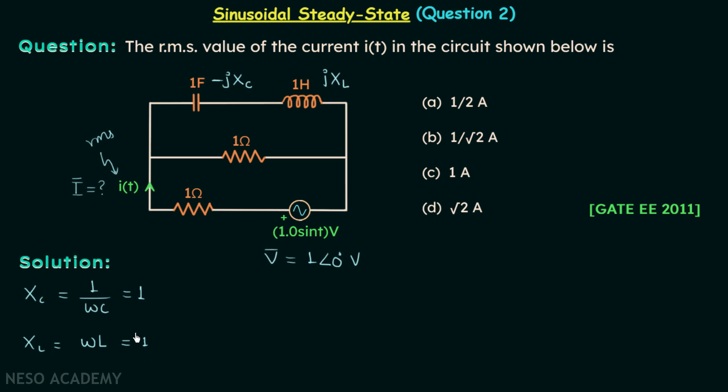So xl is 1, and we can see that here we will have negative of j and here we will have j. This means this capacitor is offering the reactance of negative j ohm and this inductor is offering the reactance of j ohm.